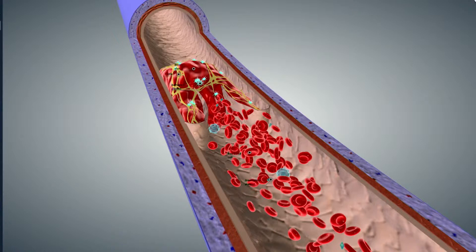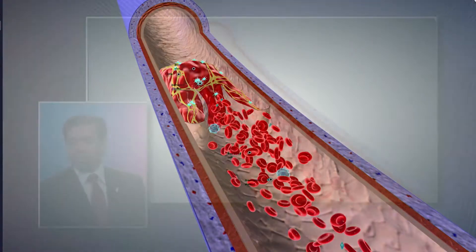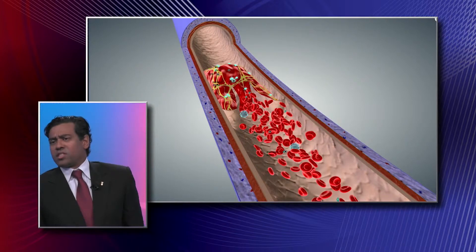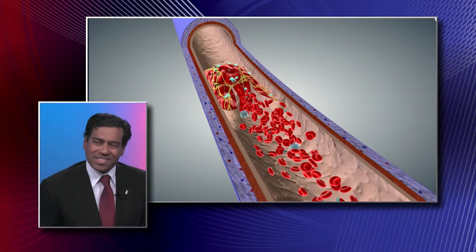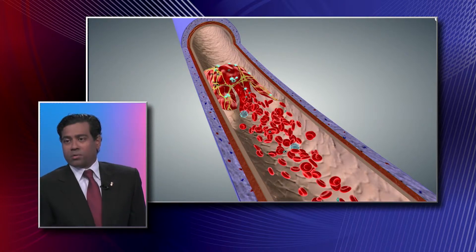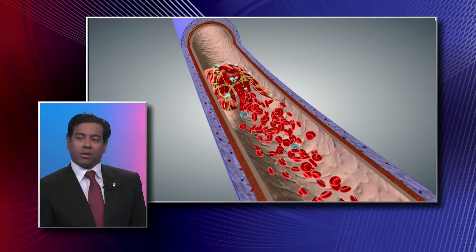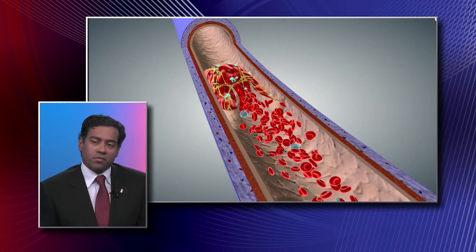Basically what we're seeing here is the inside of a blood vessel and some of the cells that comprise our blood. The red disc-shaped structures are red blood cells. There are some blue structures called platelets — these are cells that help our blood to clot. We also see some yellow strands, which represent some of the proteins or chemicals in our blood that help it to function.